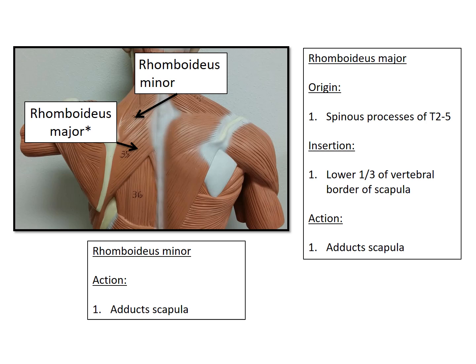Another application would be if you're on a river trip kayaking or rowing a boat. You'd be using your rhomboideus major and minor to do this rowing motion, because as you're rowing, you will be adducting your scapula.